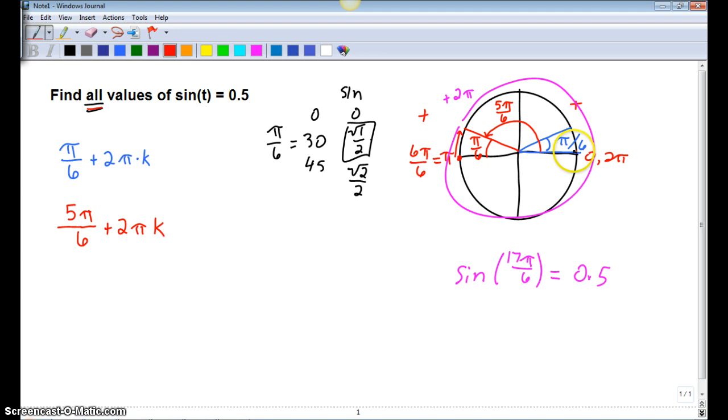For sine, our original pi over six will give us 0.5, and then every time we go around the circle, but also five pi over six, our second quadrant in which sine is positive, will give us 0.5 as an answer, and then every time we go around the circle and go back to five pi over six. That is how we get our final answer: pi over six plus two pi k, and five pi over six plus two pi k.